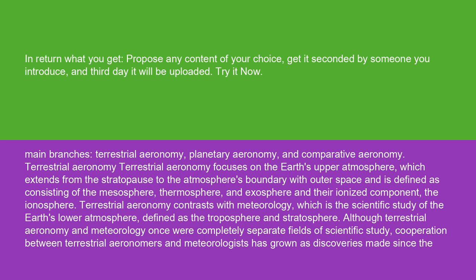Terrestrial aeronomy focuses on the Earth's upper atmosphere, which extends from the stratopause to the atmosphere's boundary with outer space, and is defined as consisting of the mesosphere, thermosphere, and exosphere, and their ionized component, the ionosphere.